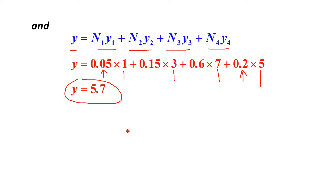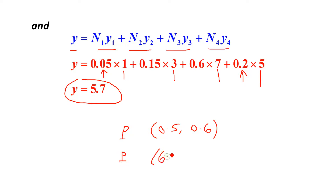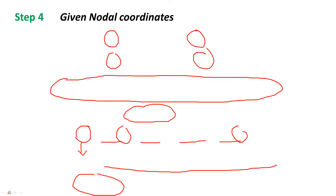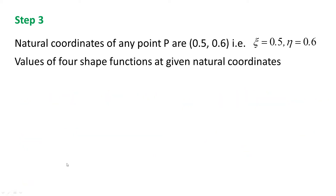So the Cartesian coordinates of any point P whose natural coordinates are 0.5 and 0.6 are: x = 6.1 and y = 5.7. These are the Cartesian coordinates converted from the given natural coordinates. Like this, if natural coordinates of any point P are given, we can determine the Cartesian coordinates of that point.